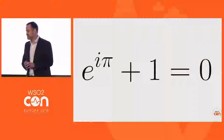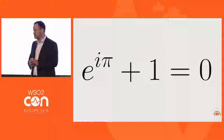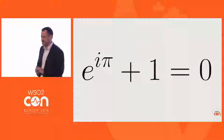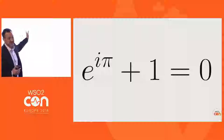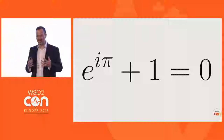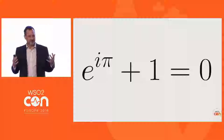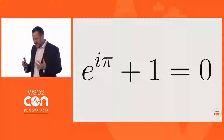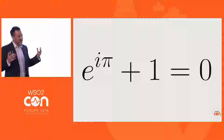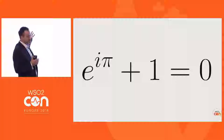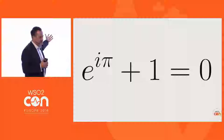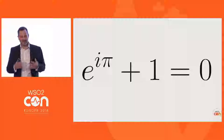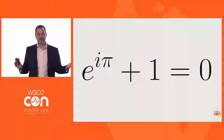Do we have any mathematicians in the room? If you're a mathematician, you'll love this. I'm a mathematician and this is one of the most amazing formulas in mathematics. It basically takes the key constants — some of the major ideas of maths: e, i, pi, zero, one, plus and equals — and somehow makes them into a formula that's true.